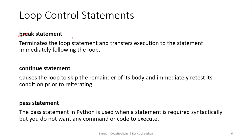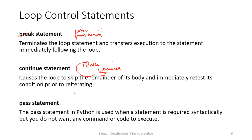Let's look at control statements one by one. In the break statement, when Python reaches the keyword 'break', it breaks the loop and moves to the next piece of code. In the continue statement, when Python reaches 'continue', it ignores all lines after it within the loop body and moves to the next iteration. Pass is similar to continue — the subtle difference is that 'pass' just ignores that line and moves to the next line within the same iteration.